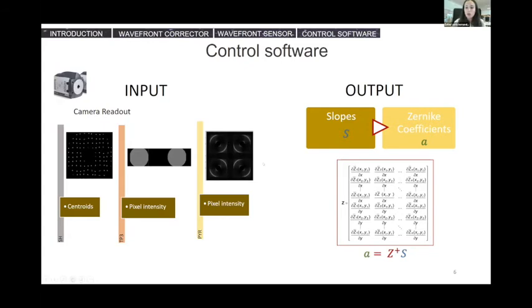As the idea is to work with three different wavefront sensors, the input in the slope calculation program will be different. In the case of the Shack-Hartmann, we have to calculate the position of the spot's centroid in each micro-lens region. While for the TP3 and the pyramid, we need to do a comparison of the intensity per pixel in the region of the different pupil for later applying each algorithm. The goal is to get the same response at the output.